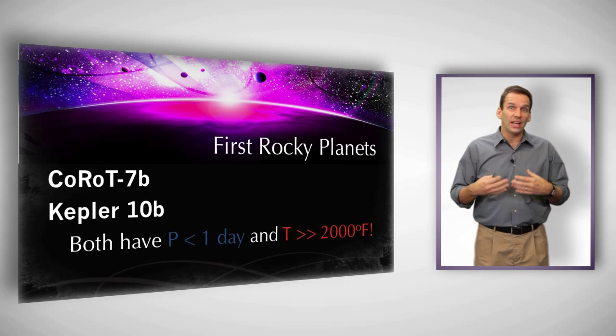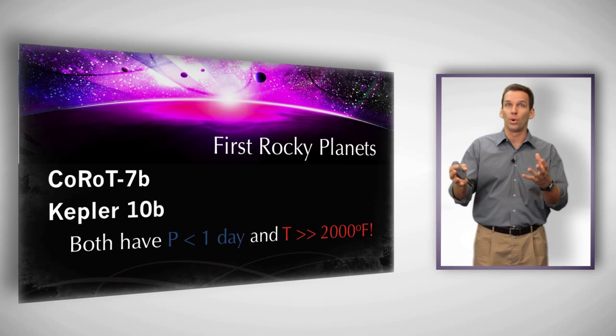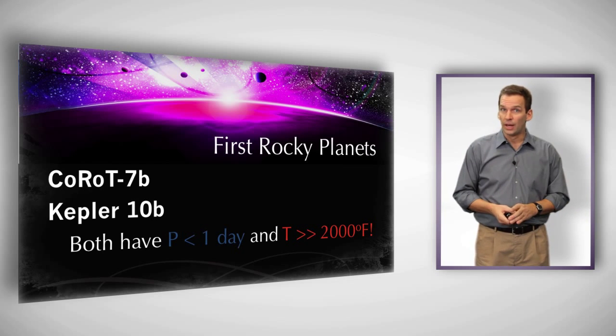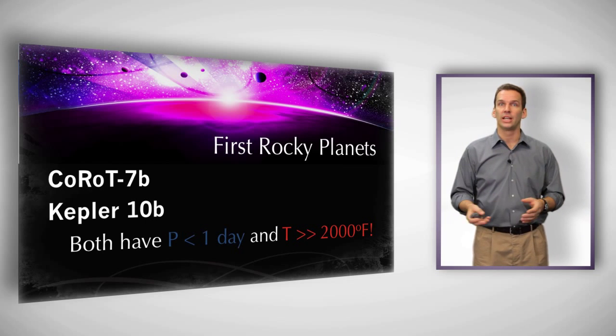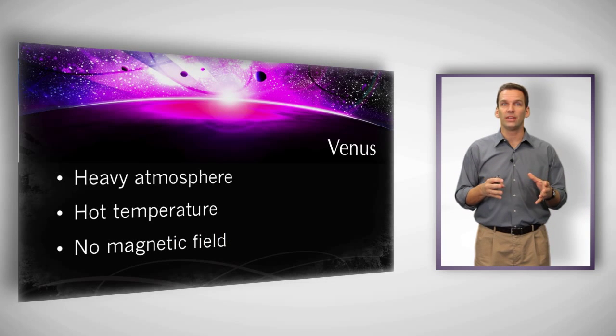When we study Venus and Mars in particular, those are two planets that are kind of on the borderline of the habitable zone around the sun, we see some interesting results. We find that both of these planets started out with an abundance of water. Mars almost certainly was covered in liquid water early in its history. Venus has a great deal of water, but it's always had a pretty high temperature. And so when we go look at Venus...